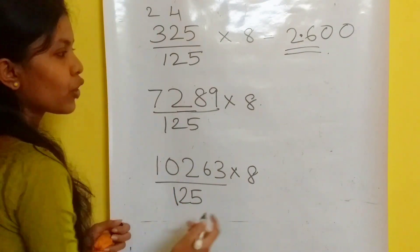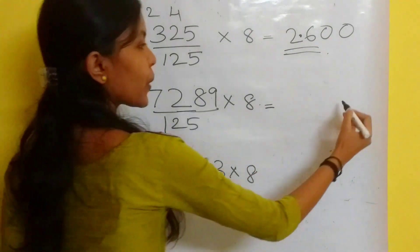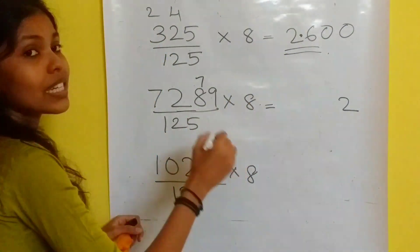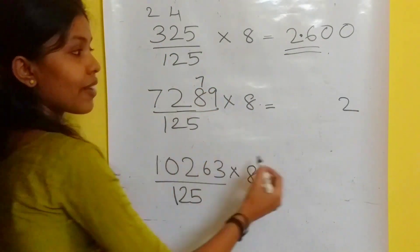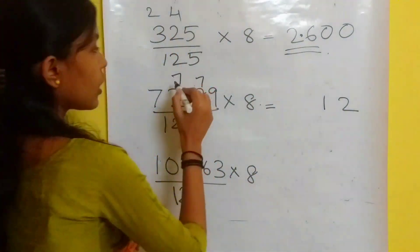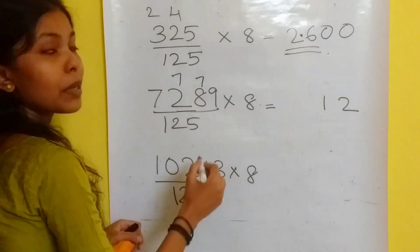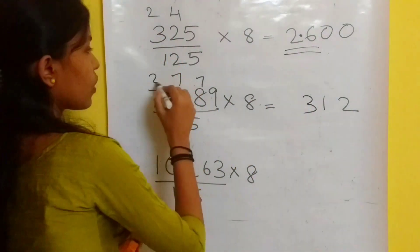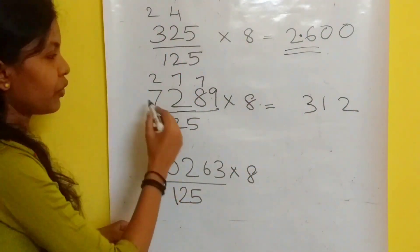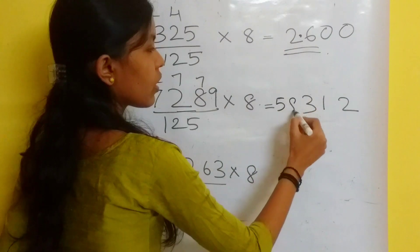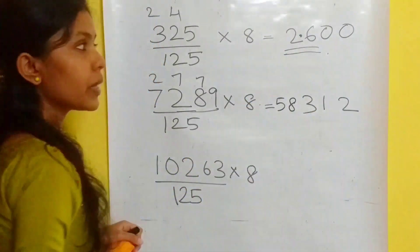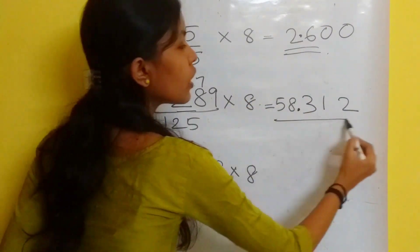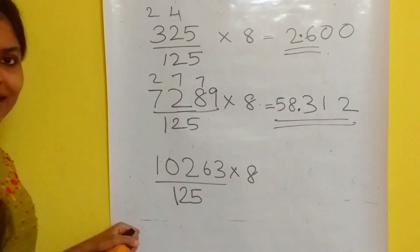Now doing it with a 4-digit number. 9 into 8 is 72, 8 into 8 is 64 plus 7 is 71, 2 into 8 is 16 plus 7 is 23, 7 into 8 is 56 plus 2 is 58. There should be three digits after the decimal point, so the answer is 58.312.